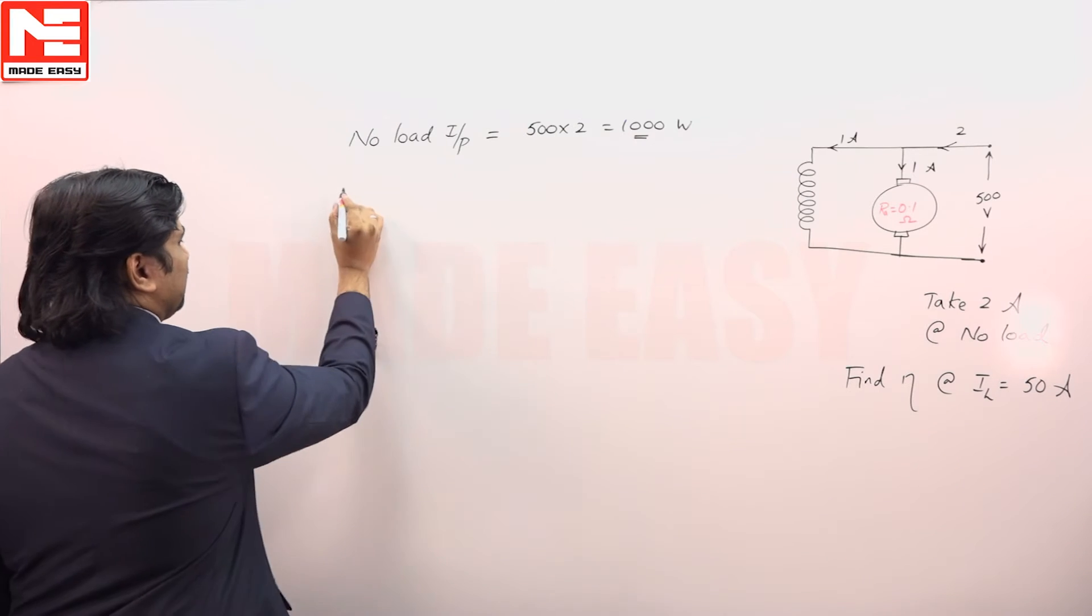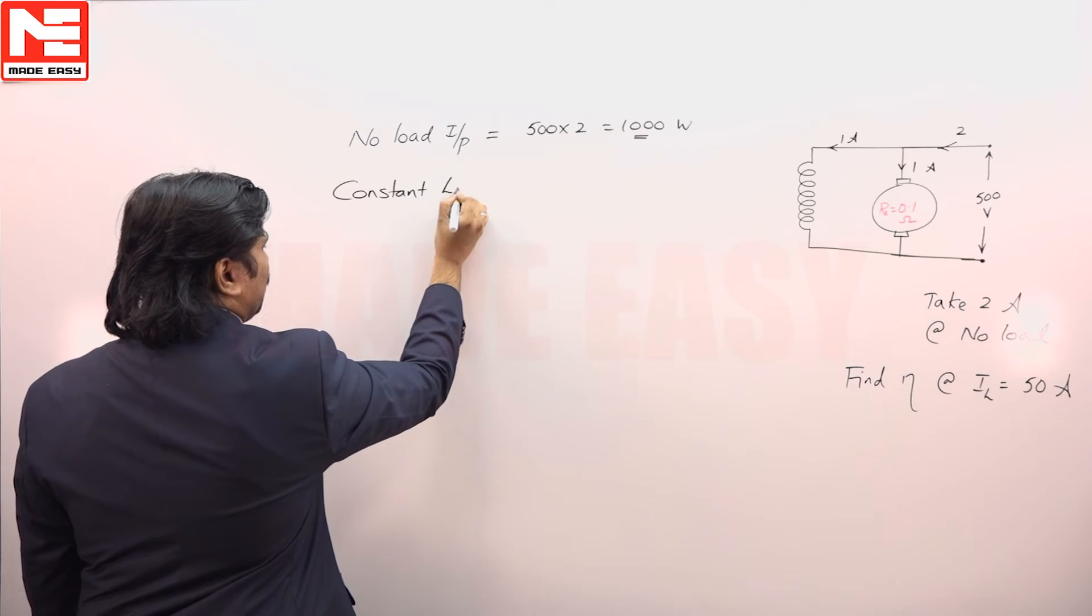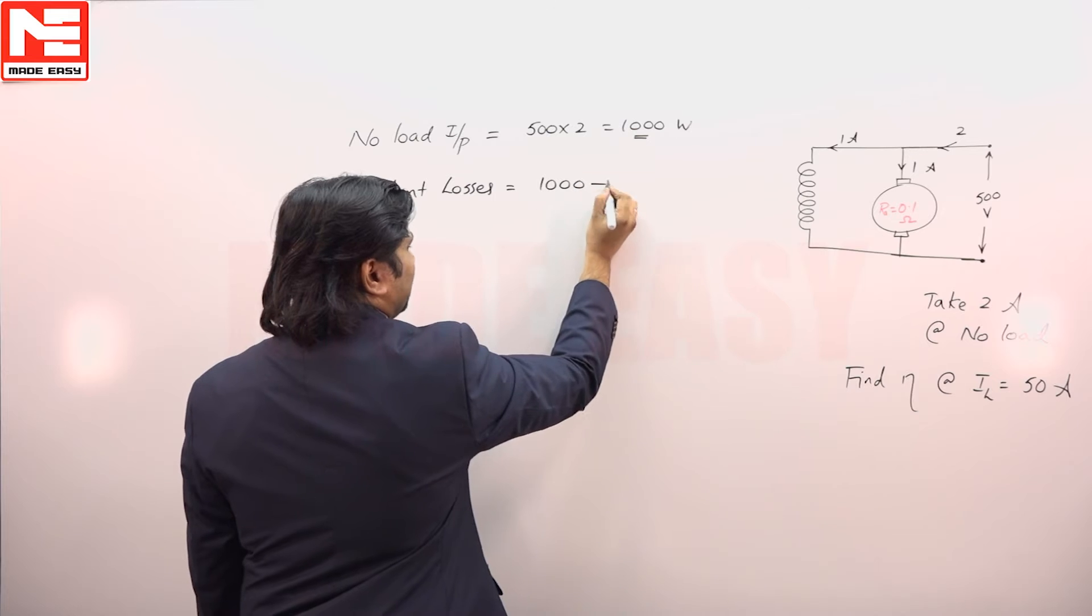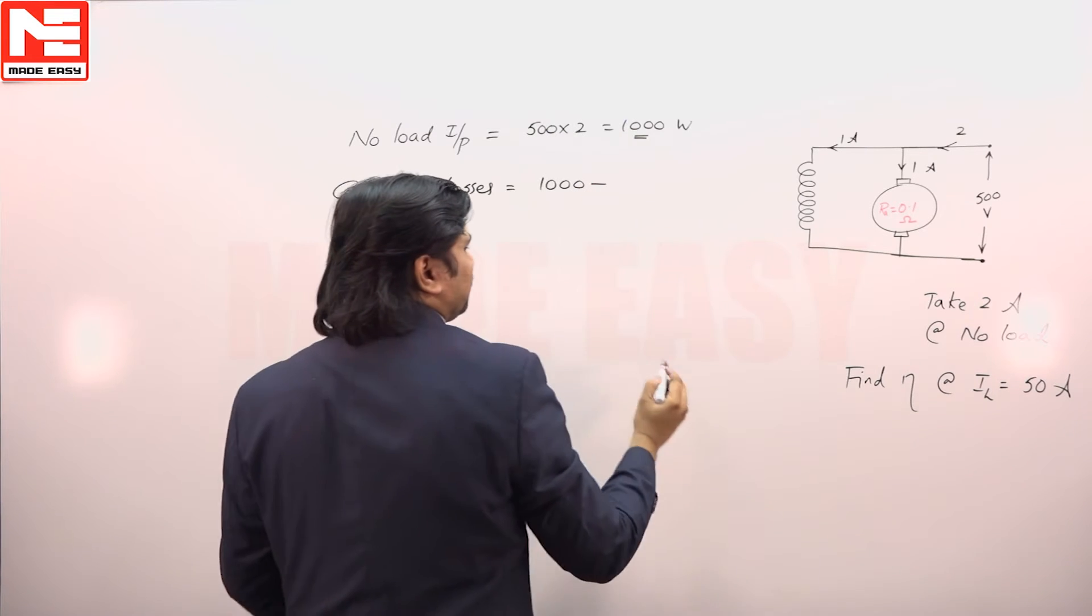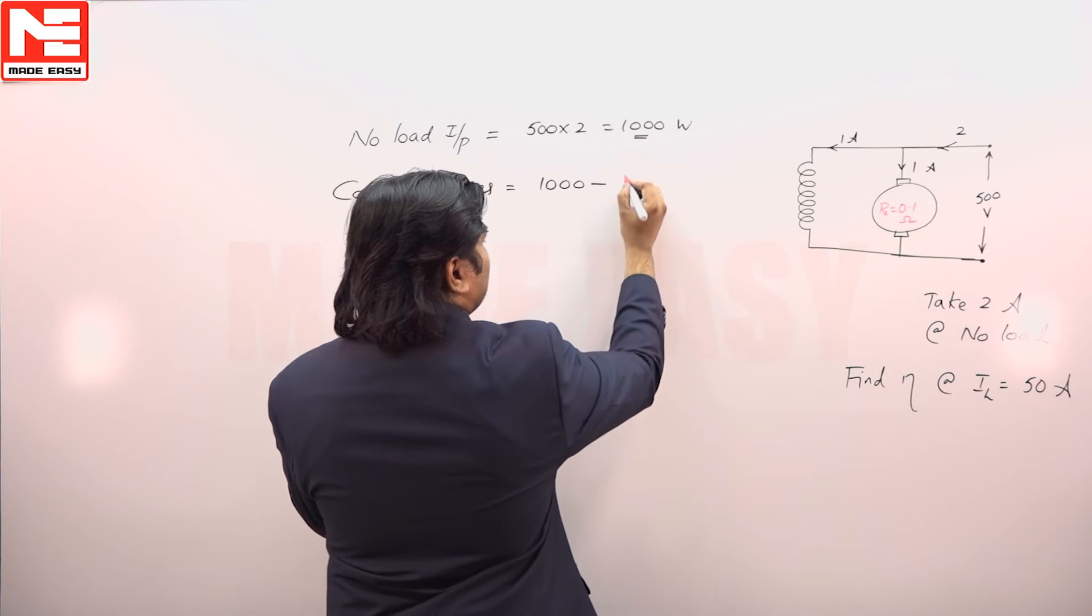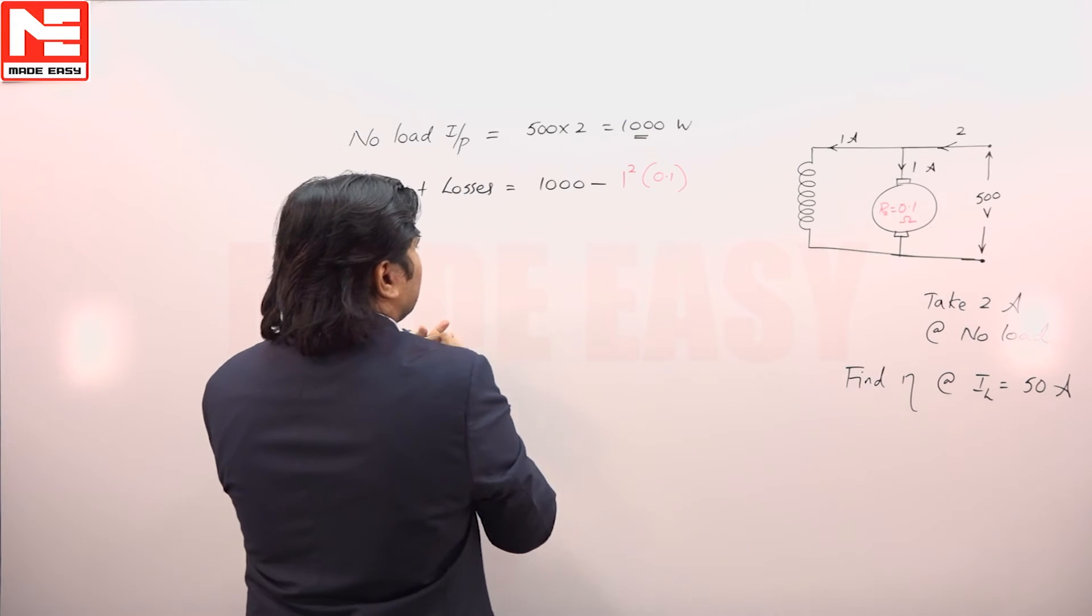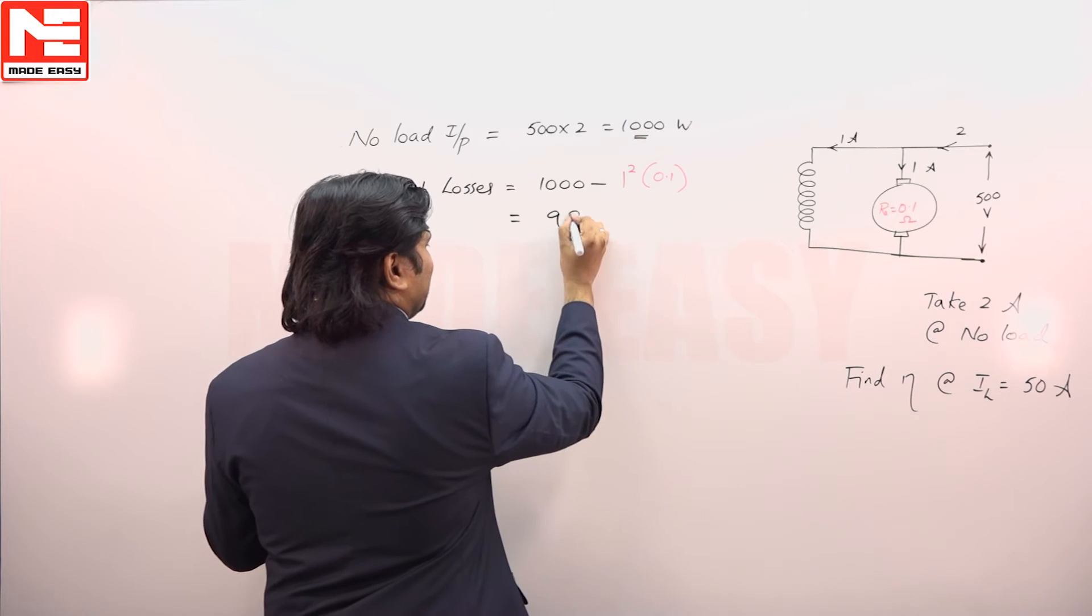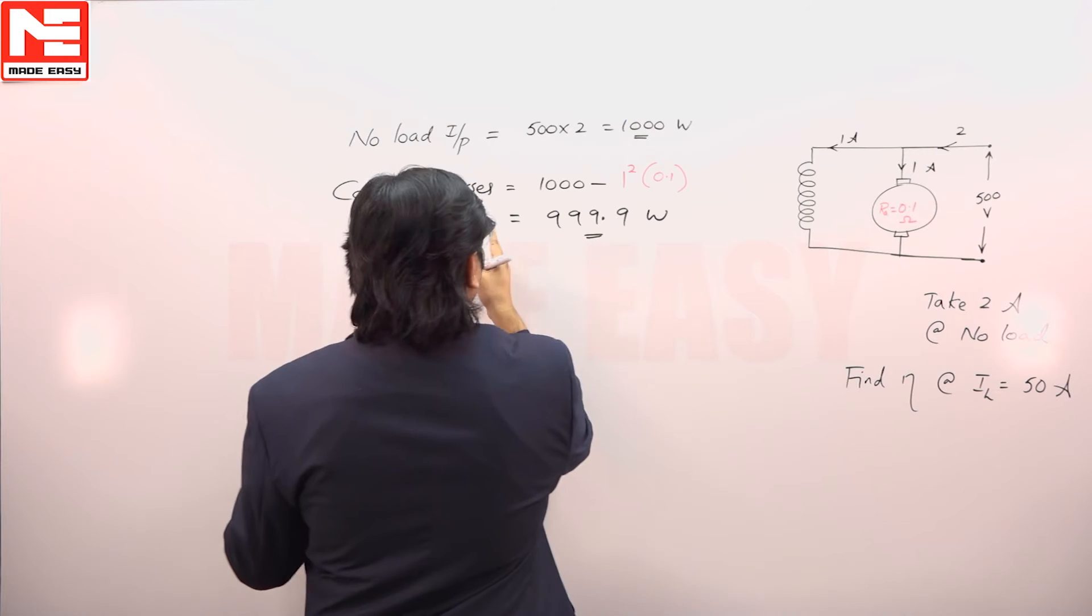Simply we can take constant losses is equal to input minus variable loss. What is the variable loss here? I A square R A, 1 square into 0.1, that is equal to this is constant loss.